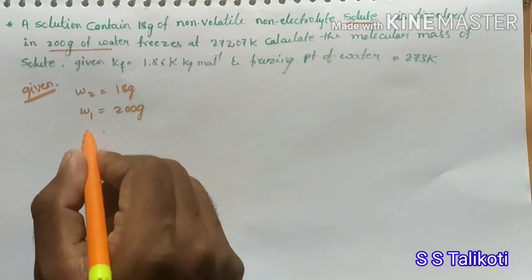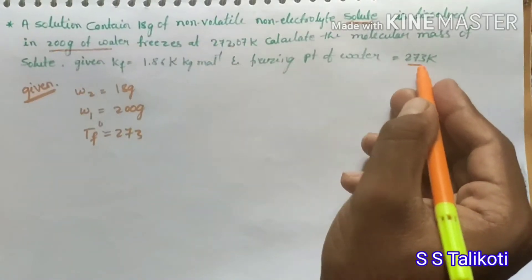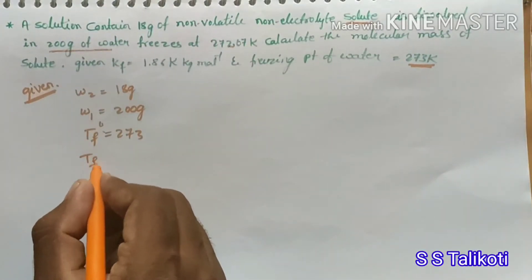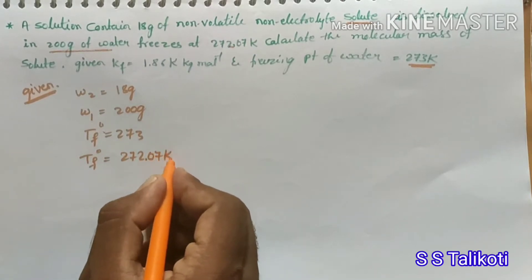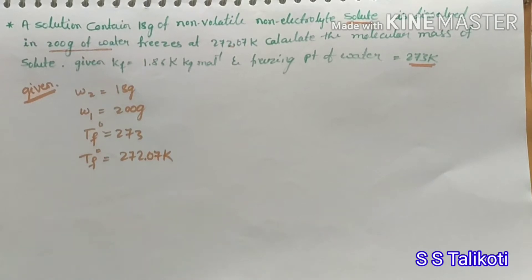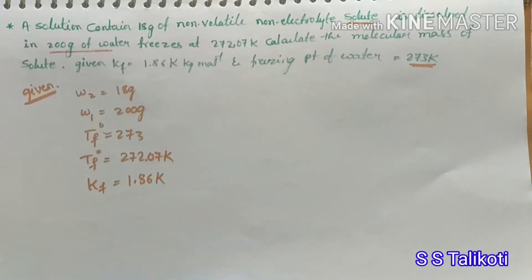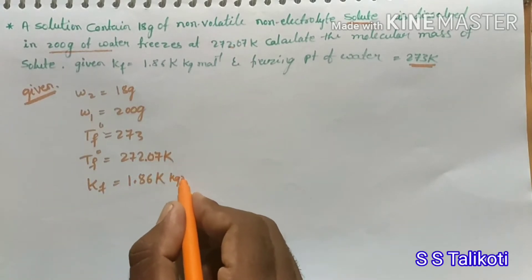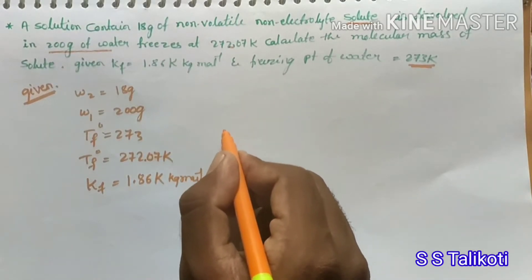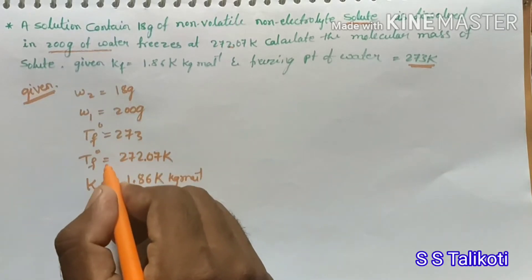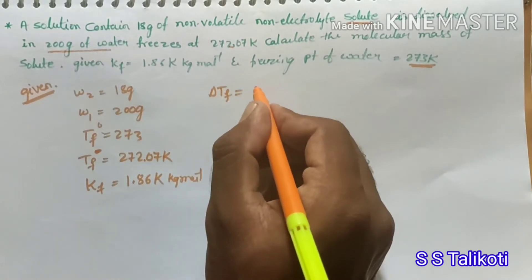They have given Tf° (freezing point of pure water) = 273 kelvin, and after adding the solute the freezing point Tf = 272.07 kelvin. They have also given the kf value = 1.86 kelvin·kg per mole. We know the formula, so first we find delta Tf.